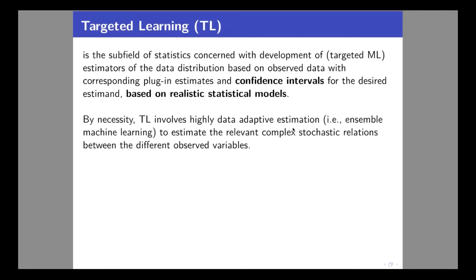Since we are not assuming particular parametric forms, we have to let the data speak and learn these relationships. The challenge is how to combine machine learning in a way that still allows inference. That's really what targeted learning, and in particular targeted maximum likelihood estimation, is able to do — to utilize state-of-the-art machine learning and still provide formal inference for your target estimand.